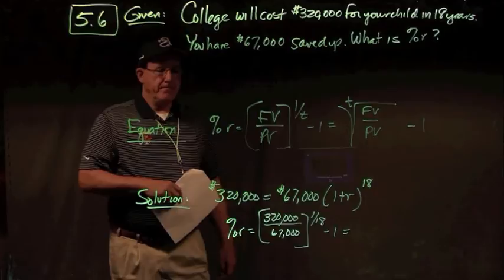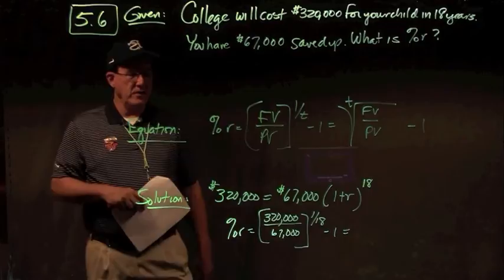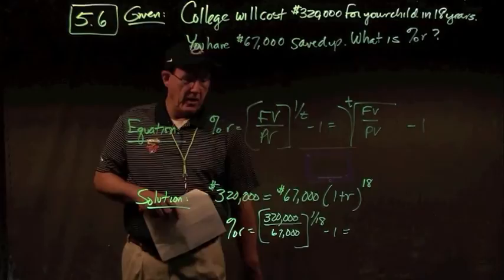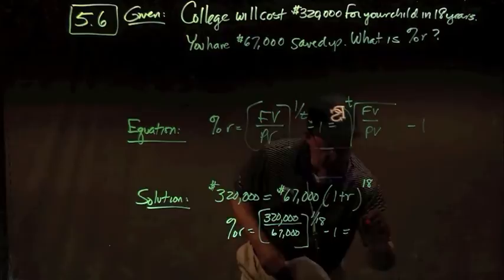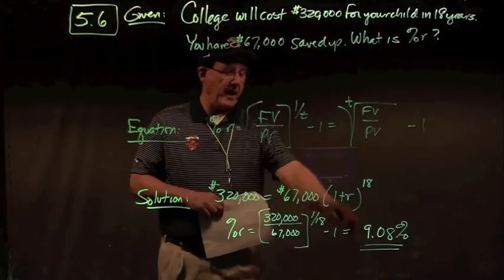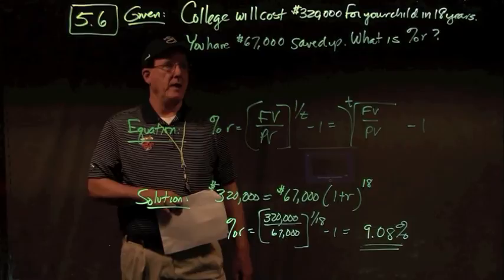So: $320,000 equals $67,000 times (1 plus r) to the 18th. Solving for R: ($320,000 / $67,000) to the 1/18th power minus 1 gives an interest rate of 9.208%. So if you put $67,000 into a mutual fund earning roughly 9.08% per year for eighteen years — never touching it — you'll have approximately $320,000 when your child is ready for college. That's your answer to problem 5.6.